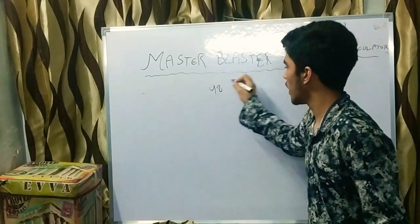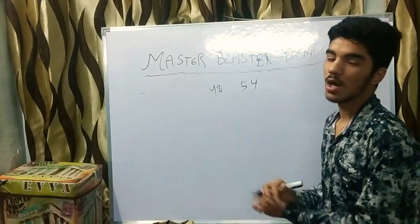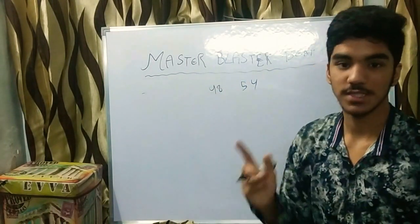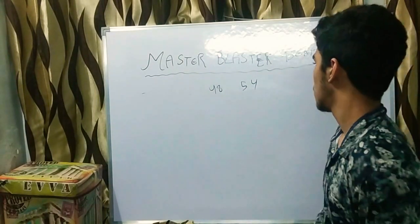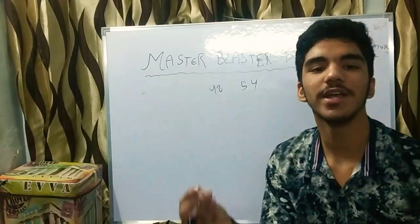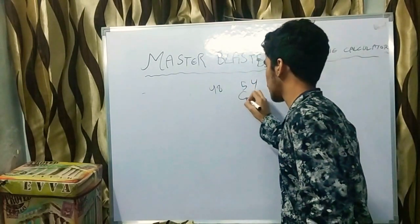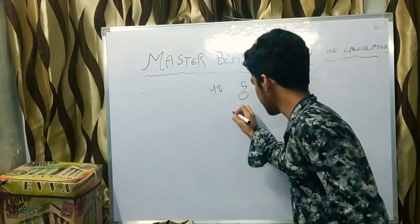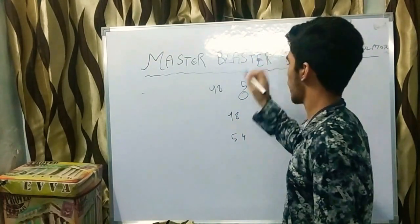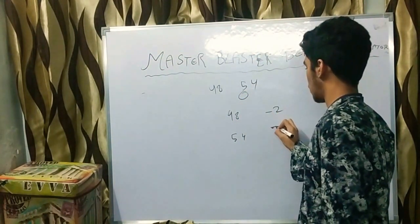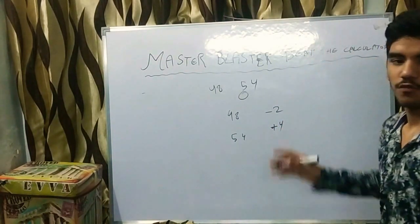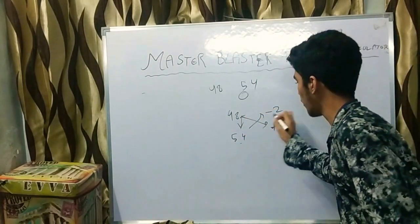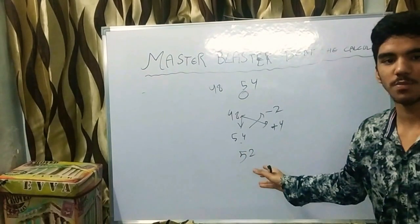Let us take 48 and 54. You might try to take the nearest base as 50. If you take 50 as the base, you have to change the method a little bit. Write the numbers: for 48, you subtract 2; for 54, you add 4. To get the first number, cross: 54 minus 2 equals 52.